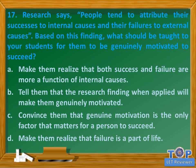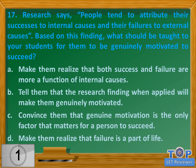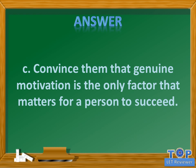Question number seventeen: research says people tend to attribute their successes to internal causes and their failures to external causes. Based on this finding, what should be taught to students for them to be genuinely motivated to succeed? A) make them realize that both success and failure are more a function of internal causes, B) tell them the research finding will make them genuinely motivated, C) convince them that genuine motivation is the only factor that matters for a person to succeed, D) make them realize that failure is a part of life. Answer: C) convince them that genuine motivation is the only factor that matters for a person to succeed.